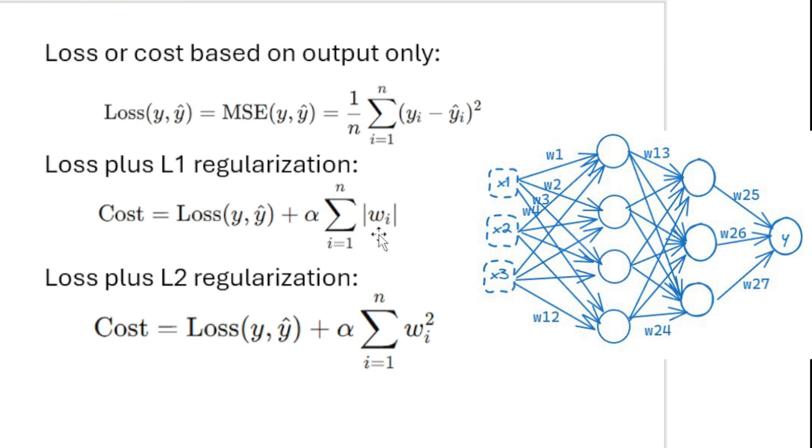But here what happens in L1 regularization is the optimizer will try to reduce the weights. In practice, some of these weights become zeros, so that means some of the inputs are completely ignored when you use L1 regularization.